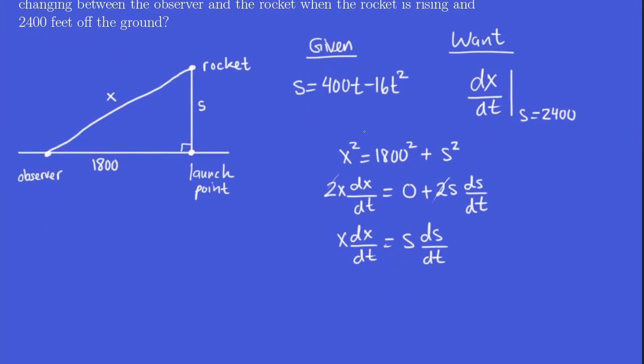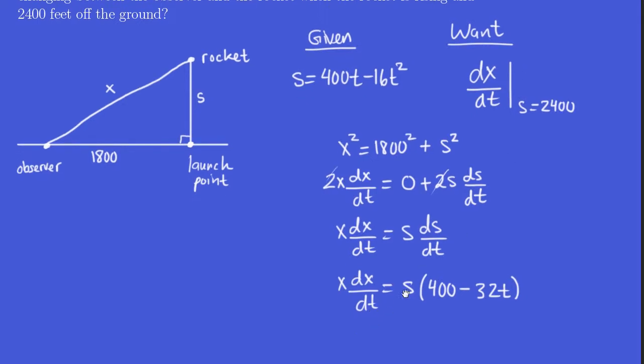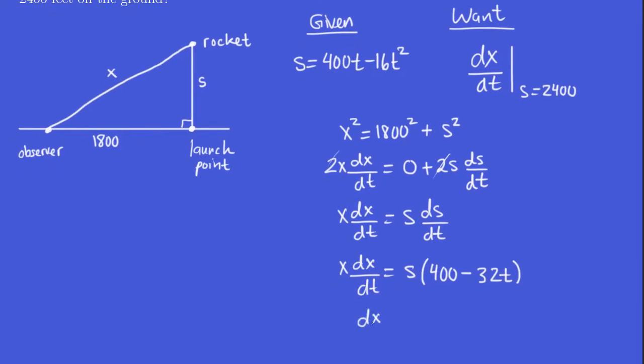Now, notice that the zero just goes away and the 2s are actually going to cancel, so we could write this as x(dx/dt) = s(ds/dt). Well, we know the formula for s in terms of t, so we can easily find ds/dt. So what is ds/dt? If s is given by this rule, the derivative with respect to time is easy: it's 400 - 32t. And we're looking for dx/dt, so let's solve for dx/dt explicitly. So dx/dt = s(400 - 32t)/x.